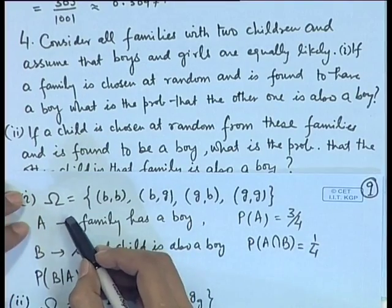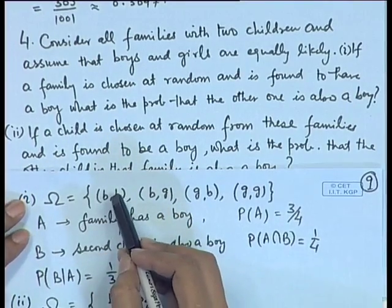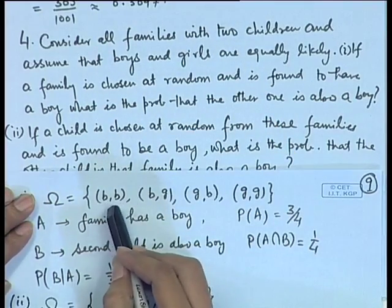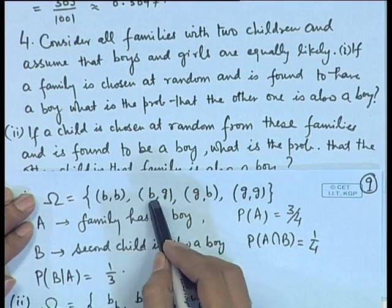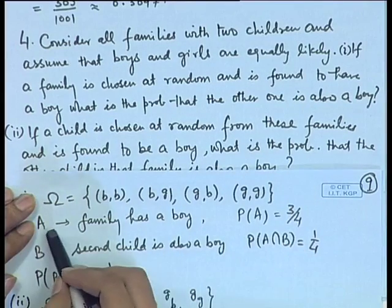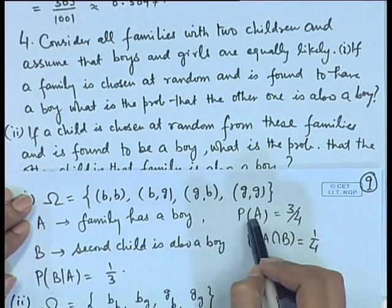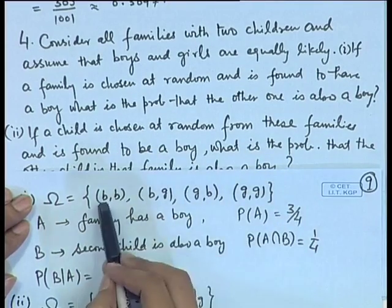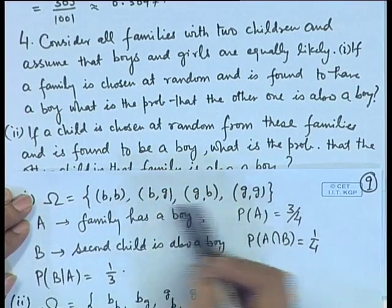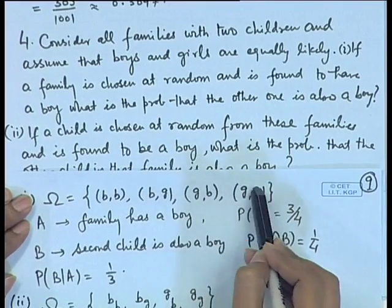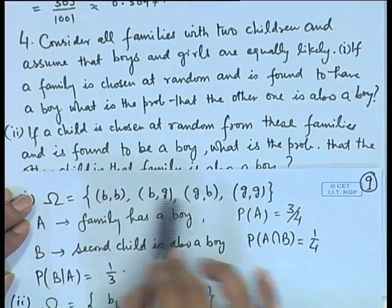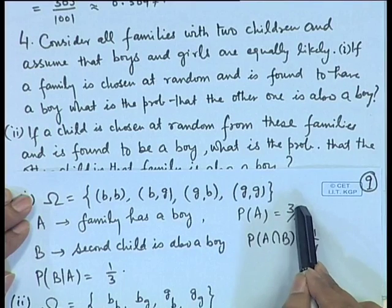In the first case, we are considering families with 2 children. We can put it as an ordered pair: both boys (BB), first boy second girl (BG), first girl second boy (GB), or both girls (GG). Event A is that the family has a boy. The probability of A is 3/4, because at least one boy appears in 3 of the 4 possibilities.